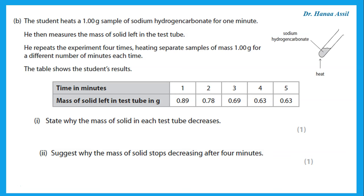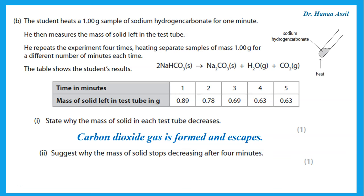The student heats a one-gram sample of sodium hydrogen carbonate for one minute and then measures the mass of solid left. He repeats the experiment four times, heating separate one-gram samples for different numbers of minutes. State why the mass of the solid in each test tube decreases. Because it is giving off a gas that is formed and escapes from the reaction — carbon dioxide gas or water vapor is formed and escapes.